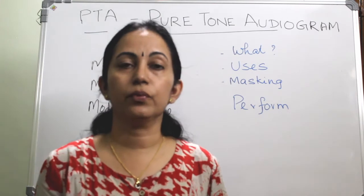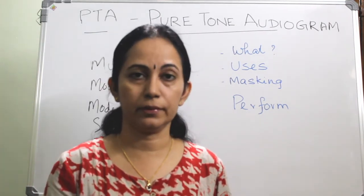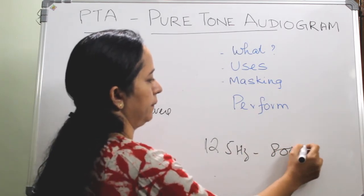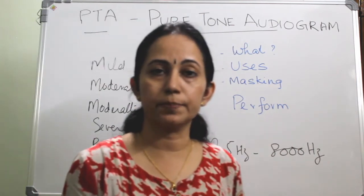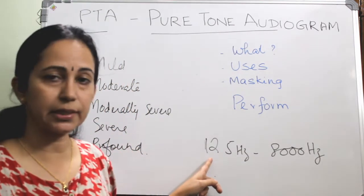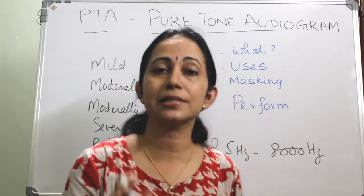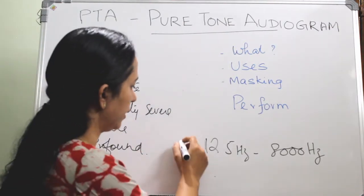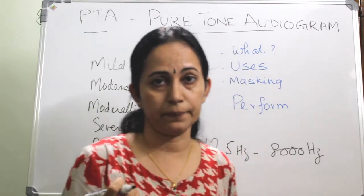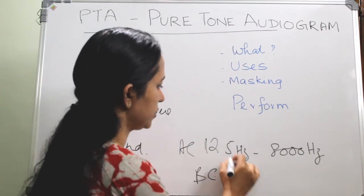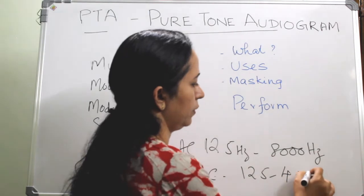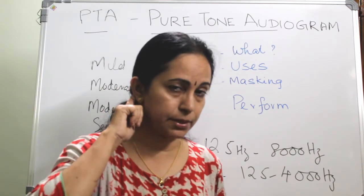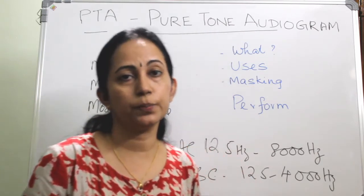In a pure tone audiogram, for air conduction threshold, tones are tested at a frequency range of 125 Hz to 8,000 Hz, because this is the range necessary to understand human speech. Air conduction is tested using headphones. For bone conduction, we use the same range but only up to 4,000 Hz, and we use a headband with a bone oscillator kept in the mastoid region.